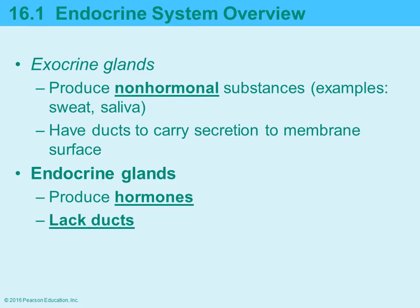There are two types of glands: exocrine glands and endocrine glands. Exocrine glands have ducts that carry whatever is being secreted — such as oils — to the membrane surface. The substance is made in the gland, secreted through ductwork, and onto the surface. What is being secreted are non-hormonal substances like sweat, oils, and saliva.